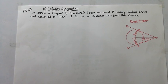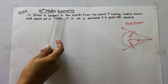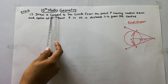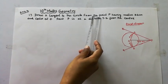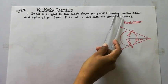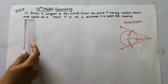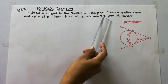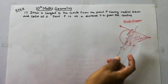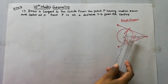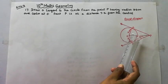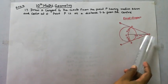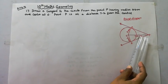Hello students, welcome to Max and Tamil channel. 10th standard maths geometry exercise 4.4, problem 17: draw a tangent to the circle from the point P, having radius 3.6 cm and center at O. Point P is at a distance of 7.2 cm from the center.